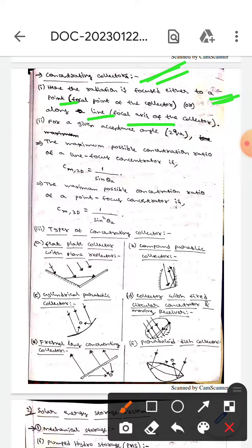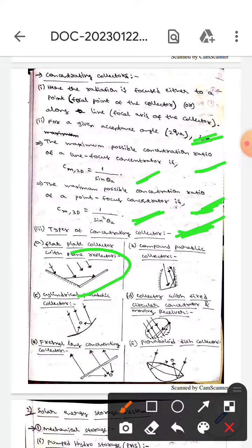For a given acceptance angle 2θa, the maximum possible concentration ratio of a line-focused concentrator is 1/sin θa, whereas the maximum possible concentration ratio of a point-focused concentrator is 1/sin² θa. There are different types of concentrating collectors.